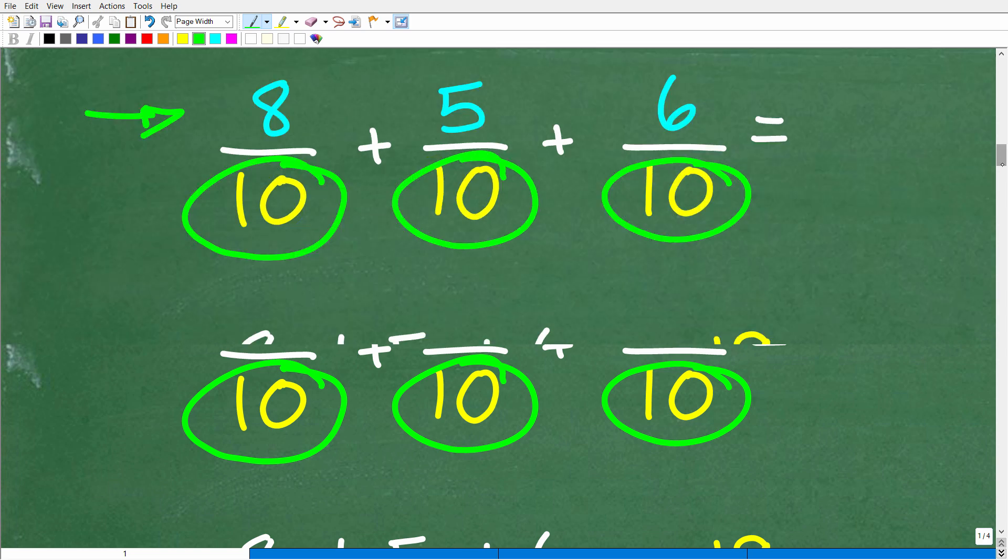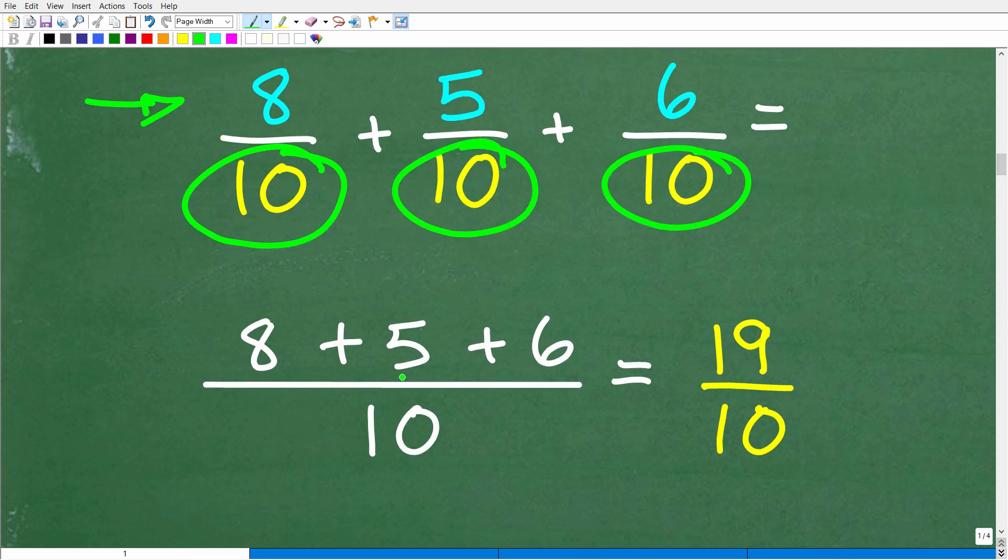We're going to add those up. So 8 plus 5 plus 6 over 10, which is our same denominator, our lowest common denominator. 8 plus 5 plus 6, of course, is 19 over 10. Okay. So we are done.